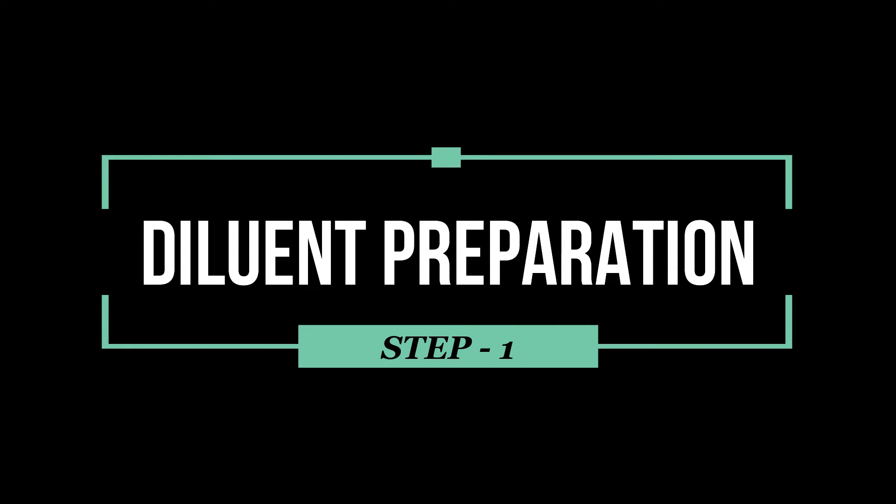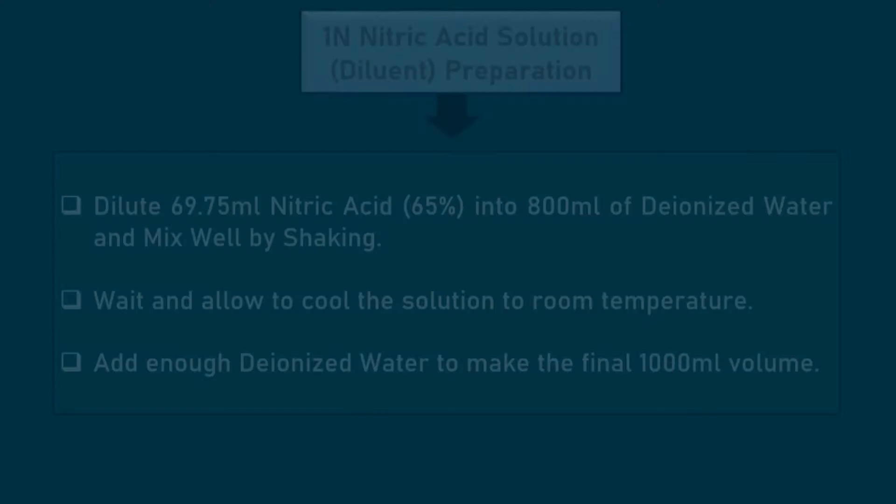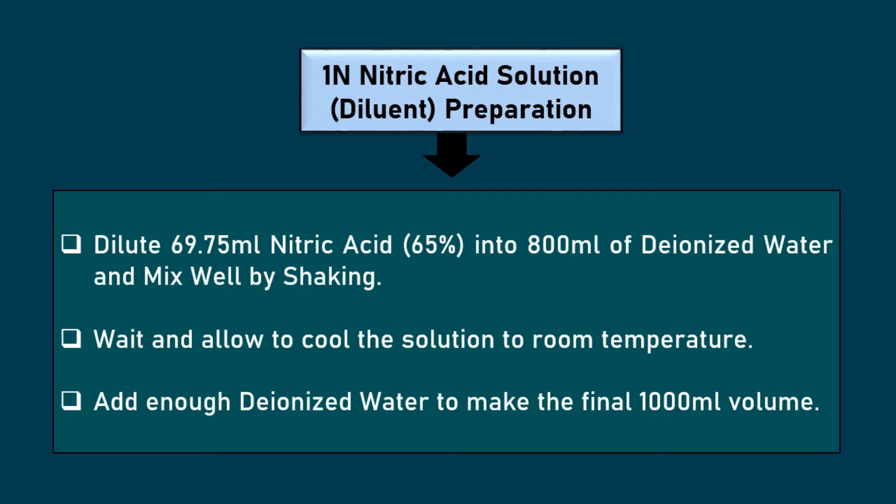For the preparation of heavy metal and mineral standard, generally one normal nitric acid is used as diluent. To prepare one normal nitric acid, just dissolve 69.75 ml of 65% nitric acid in 800 ml deionized water and finally volume to 1000 ml by adding enough deionized water.